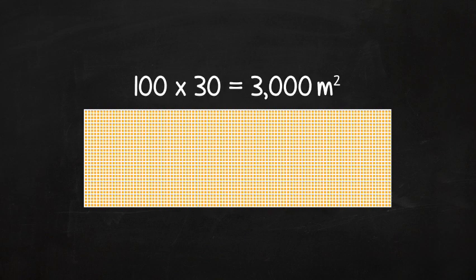That's a lot of squares. Let's count how many. 1, 2, 3, 4, 5, 6. Wait a minute. We can just multiply length times width to get the area. 100 times 30 equals 3,000 meters squared. That was easy.